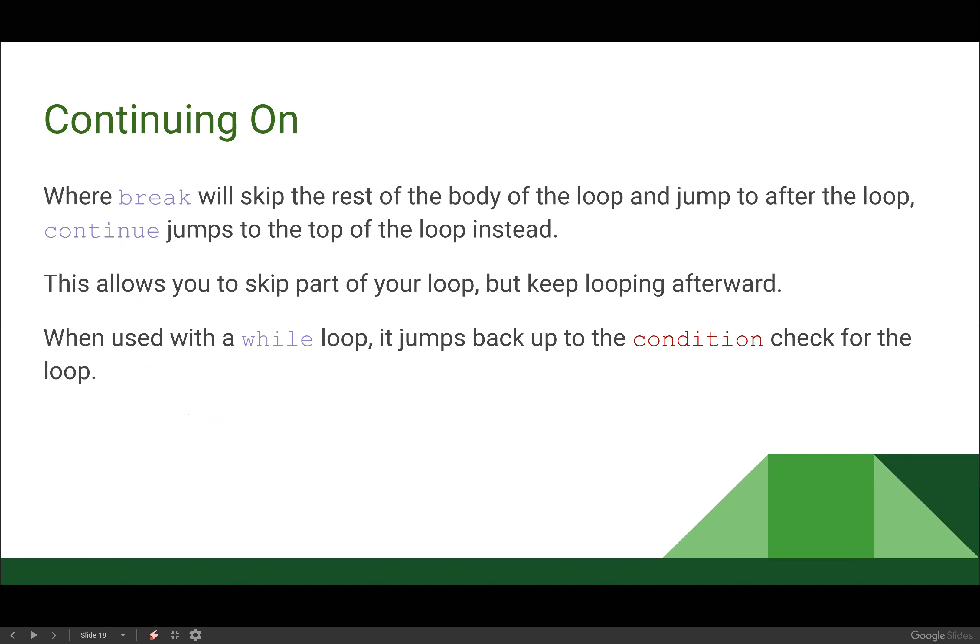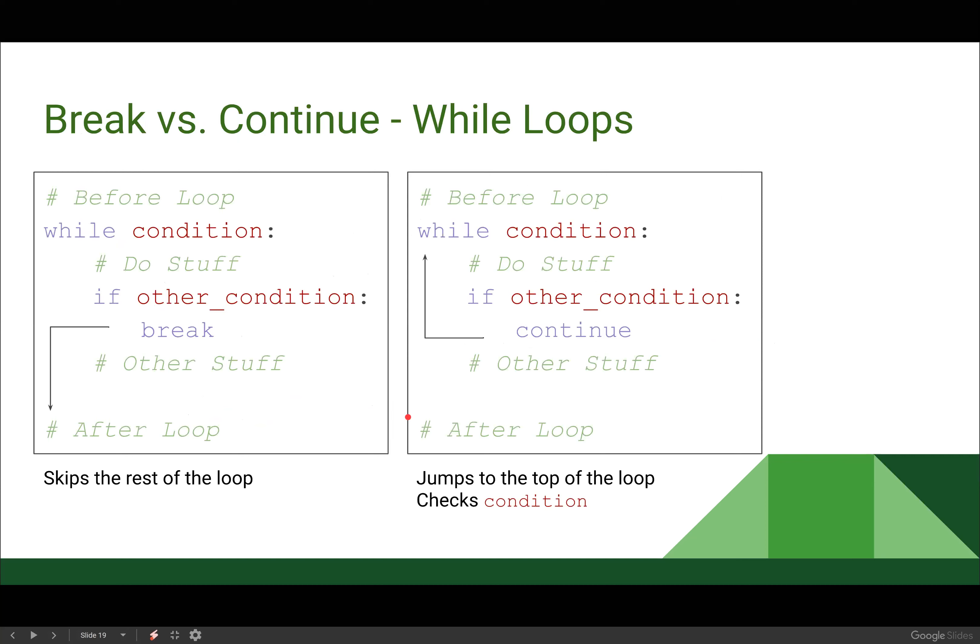So if the condition is false after you continue, you'll still exit the loop, but if the condition is still true, you will keep looping. So here's a little bit of a difference between the two. So we have our code that comes before our loop, we have while the condition, so while this condition is true, we're gonna do some stuff in our loop. If some other condition is true then we're gonna break. When we break, we completely exit and skip all this other stuff in our loop. We're gonna skip the rest of the loop and exit it completely.